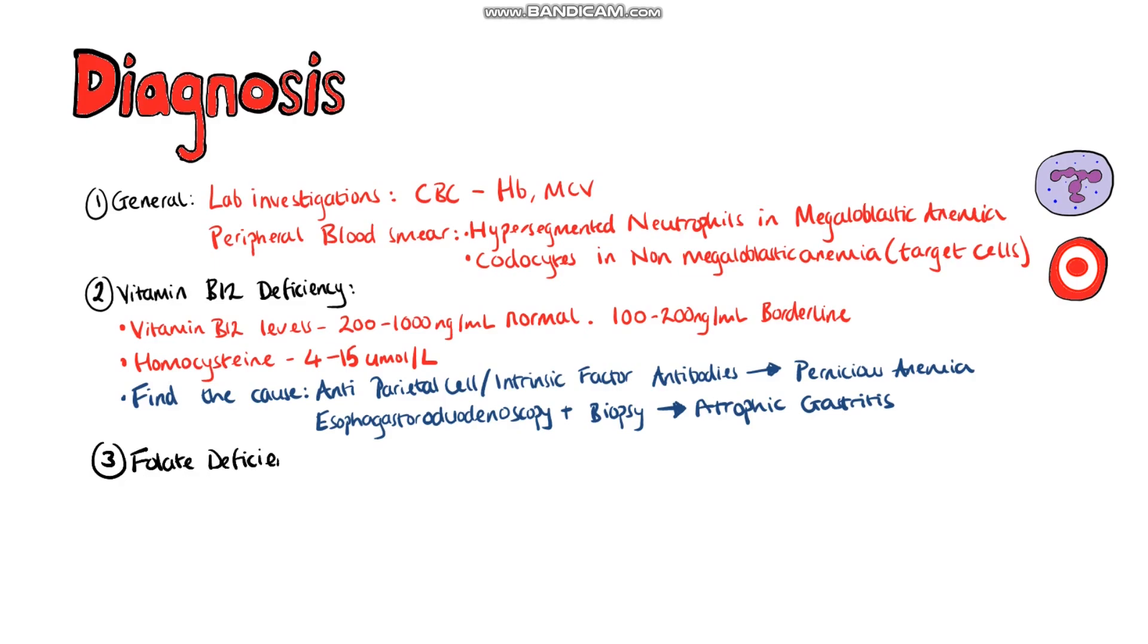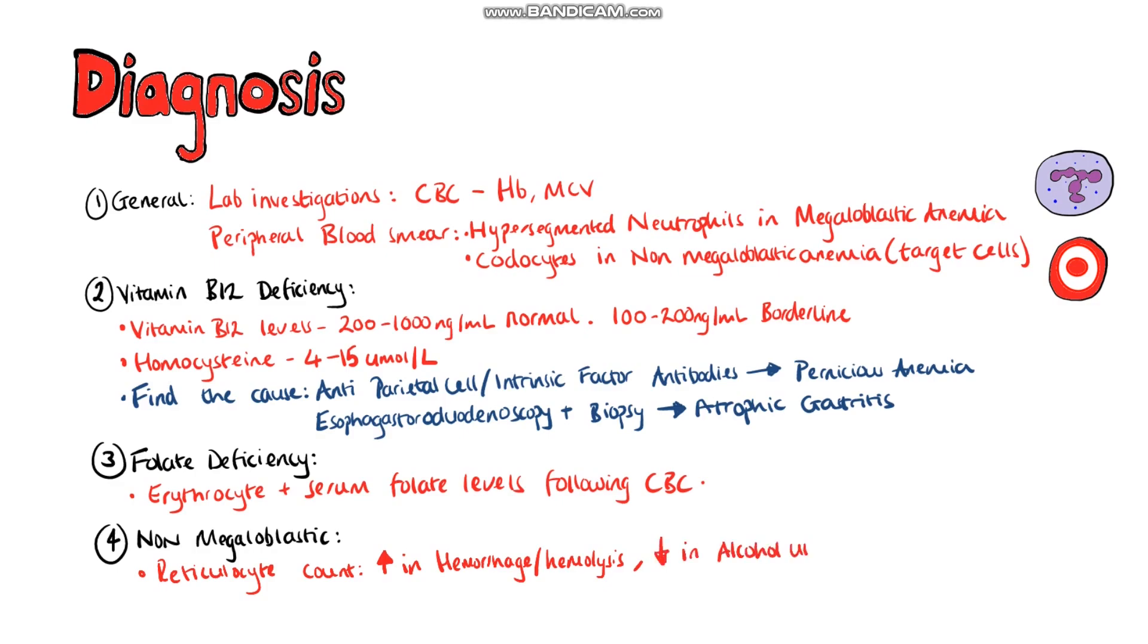In testing for folate deficiency, measurement of erythrocyte and serum folate levels are performed following the CBC. For non-megaloblastic anemia, reticulocyte count can help distinguish between causes where the bone marrow is not working well, such as alcohol use or hypothyroidism, and causes like hemolysis or hemorrhages. Reticulocyte count will be high in hemolysis or hemorrhage and will be low in alcohol use or hypothyroidism.